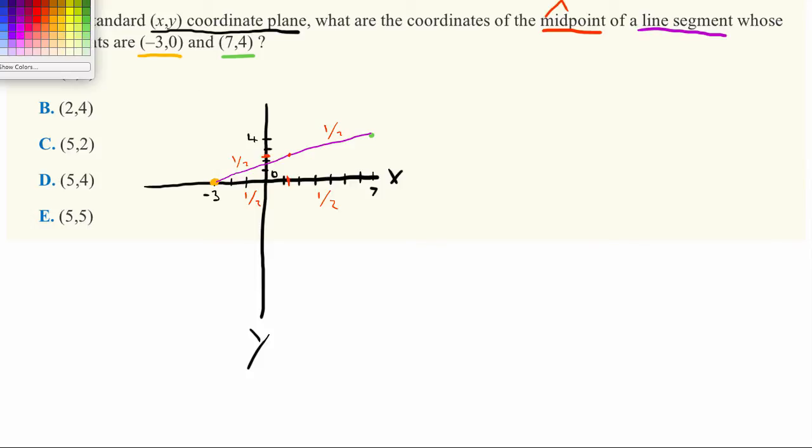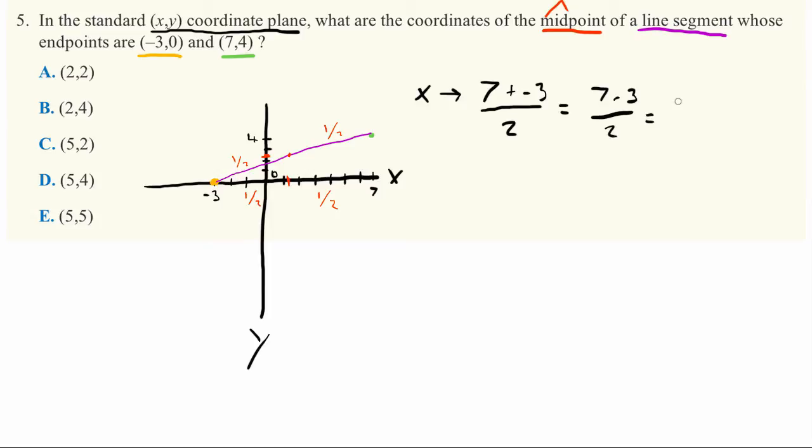Now let's ask ourselves how can we find these points. Well, it turns out it's really quite simple - all we do is add together 7 and -3, so (7 + (-3)) divided by 2. Right now we're trying to find the x-coordinate. This is the average of these two points, it's the midpoint. This is exactly the same as saying (7 - 3)/2, which is 4/2, which is 2.